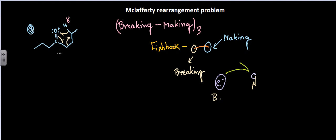After the electron transfer, we get the structure. This portion will remain as it is, and one bond is broken here — so only one part will be there. This C is connected here, and you can see a fish hook, meaning a new bond is formed here. You must put two lines here because a new bond is formed.